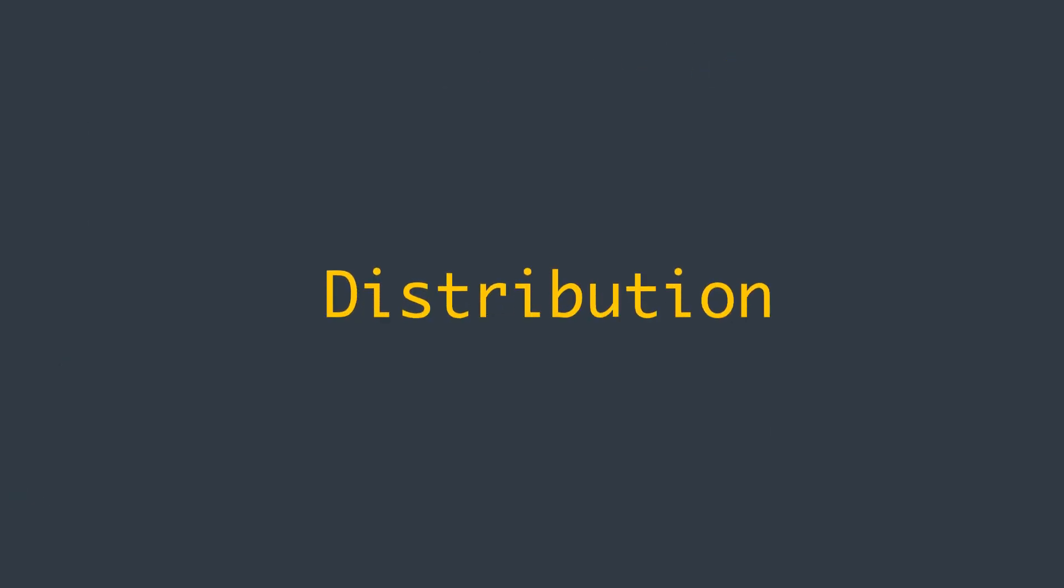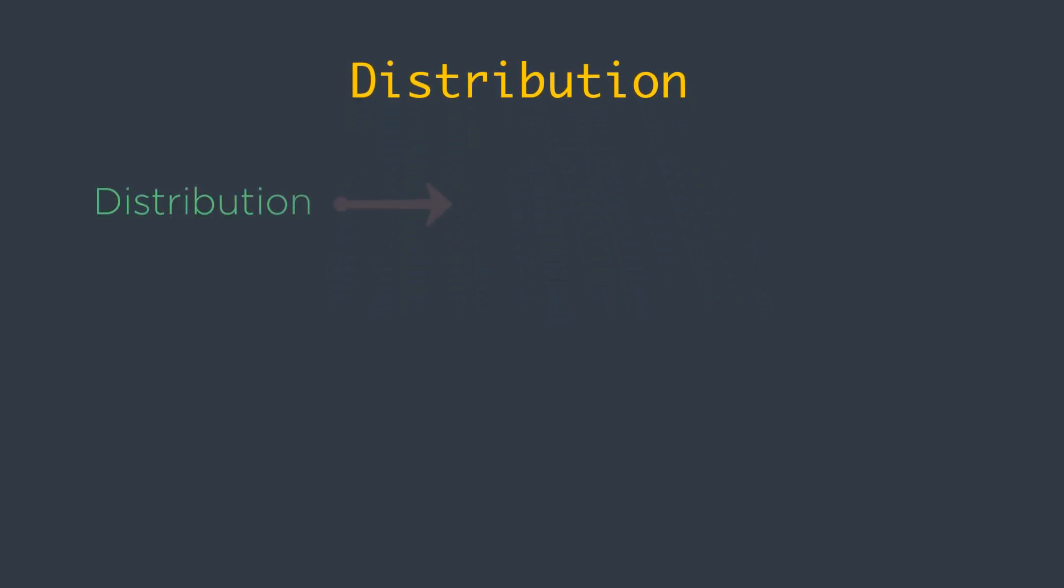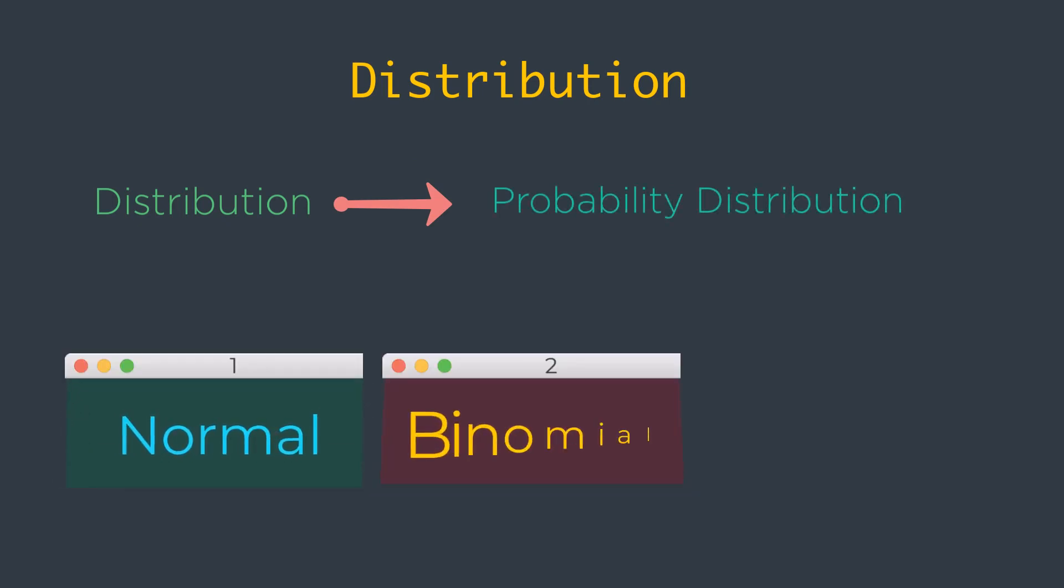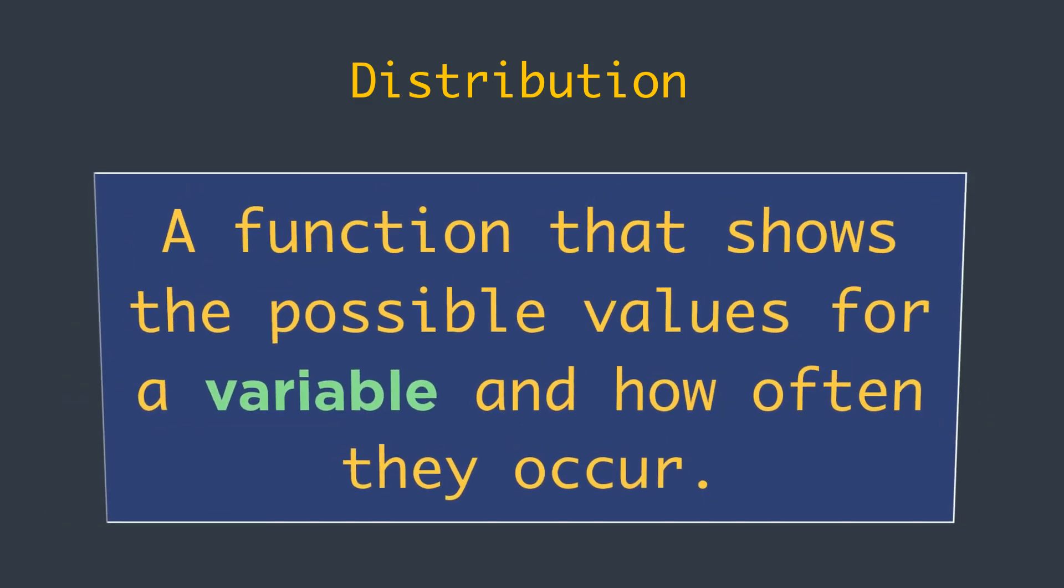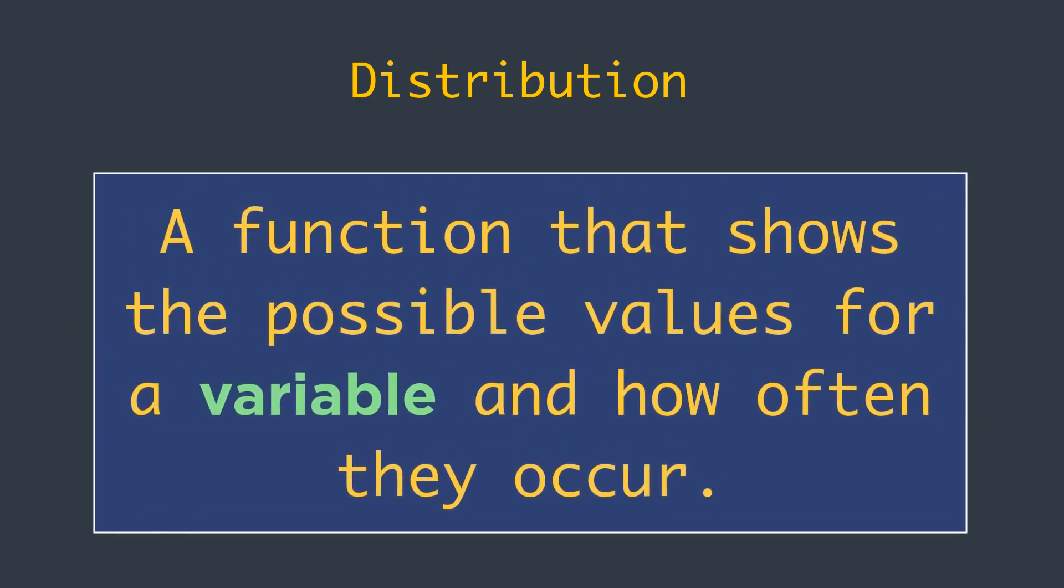So what is distribution? In statistics, when we use the term distribution we usually mean a probability distribution. Good examples are the normal distribution, the binomial distribution, and the uniform distribution. To get a better understanding, we should start with a definition. A distribution is a function that shows the possible values for a variable and how often they occur.